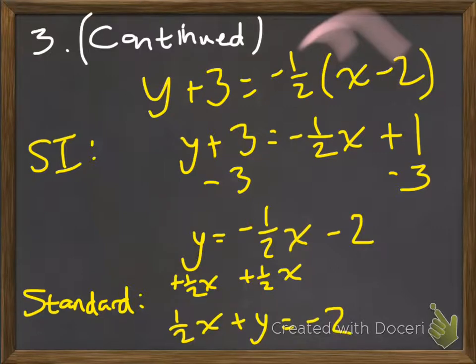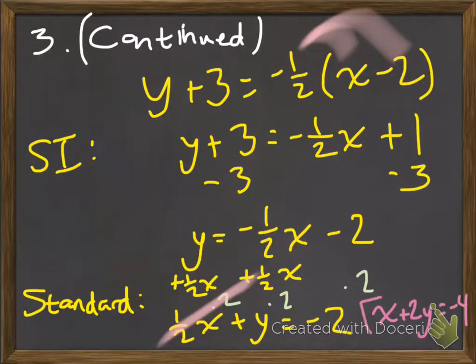Some of you are going to be tempted to stop there, but this 1 half tells us that not all of the coefficients are whole numbers, so we need to multiply everything by 2 to get rid of that denominator. This will cancel that, which is what that purpose is for. So these cancel, and we're left with 1x + 2y = -4, and that would be your answer in standard form.